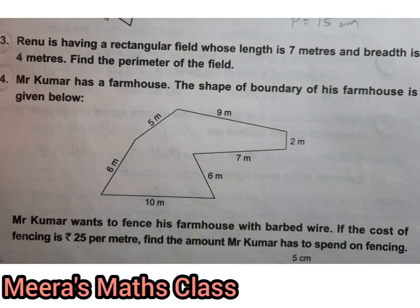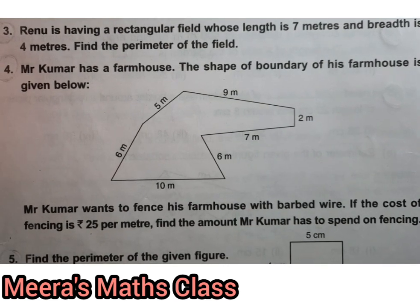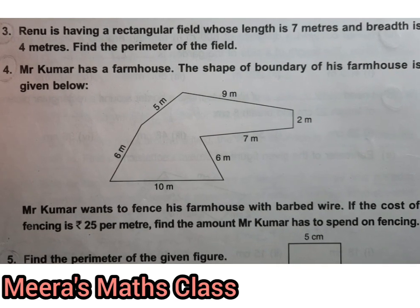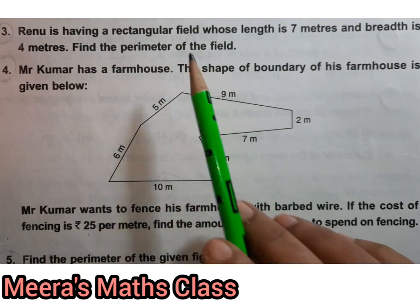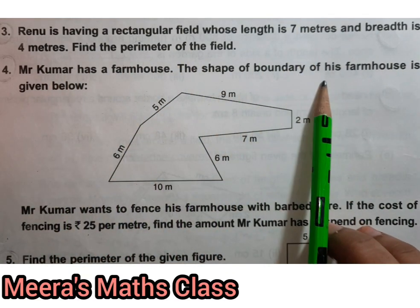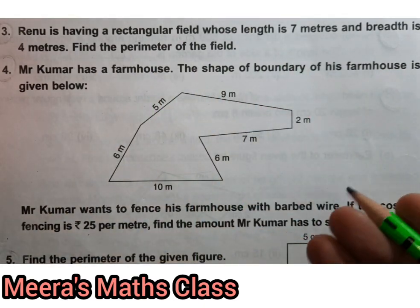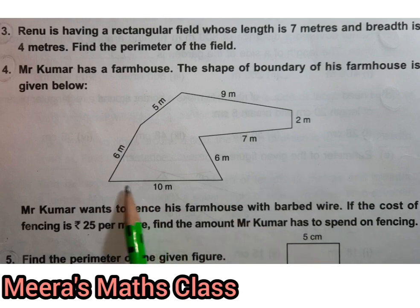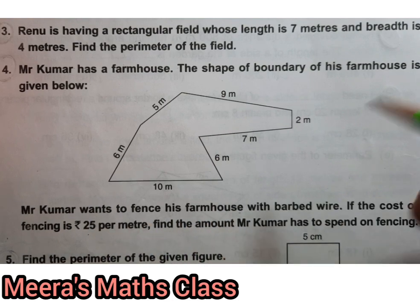Okay, now the next one is a little bit to be understood properly. Okay, let me adjust this. Now Mr. Kumar has a farmhouse. The shape of boundary of his farmhouse is given below like this. The farmhouse is not like square or rectangle, it is having a random shape.